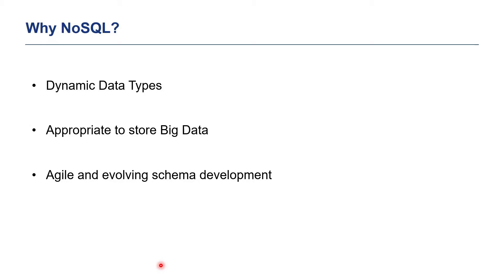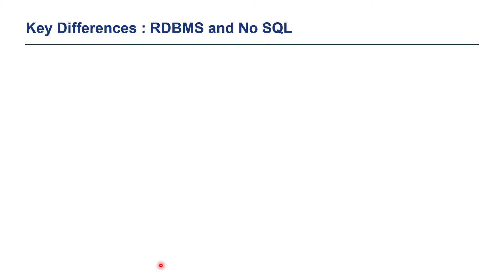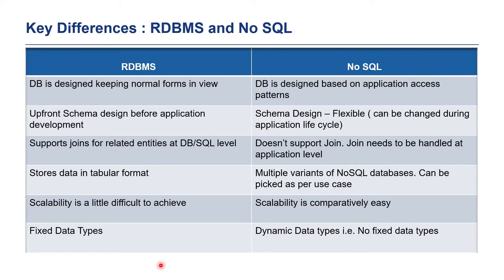We have looked at NoSQL introduction and why NoSQL. Now let us look at key differences between RDBMS and NoSQL. The first difference is that in RDBMS, the database is designed keeping normal forms in view, while in NoSQL there is no concept of normal forms. We can design the database based upon application access pattern — meaning what queries are going to be run over the database, how many times, what are the reads and writes, how frequently you are going to read, which database table you are going to read, and for how long. These things need to be defined first in NoSQL database design rather than working on normal forms.